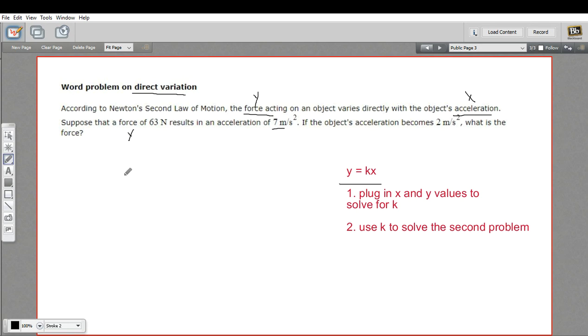This is a typical direct variation problem. You get some values for x and y, and you need to plug them into this and solve for k. So try to find the constant of variation. And once you've found that, you'll use k to solve the second part of the problem. So there's two meters per second, that's for the second part of the problem.